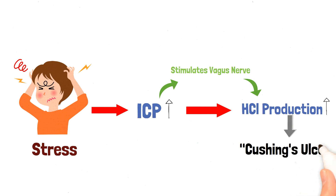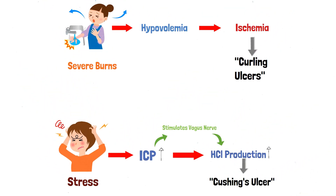Both Curling ulcers and Cushing ulcers are examples of stress gastritis, which occur in response to a physiologic stressor that affects the main function of the stomach mucosa. In reality, any situation involving shock, sepsis, or severe trauma can lead to ulceration.